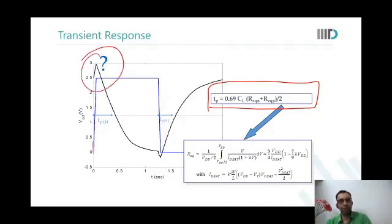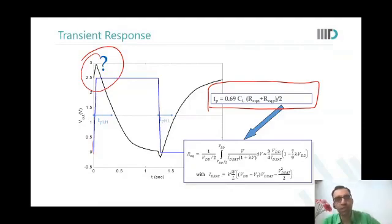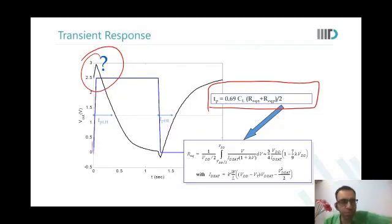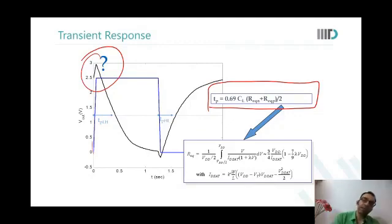A student suggests: 'Because of the coupling capacitance between the input and the output — the gate input with the output — the Miller capacitance.' The instructor confirms: 'Yes, the Miller capacitance. We said it is more relevant in analog circuits, but you can see in digital circuits also we see these notches.'